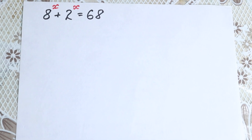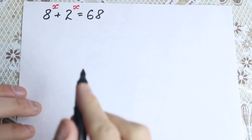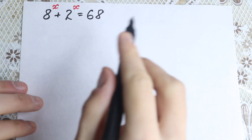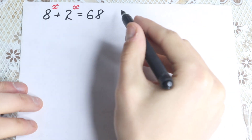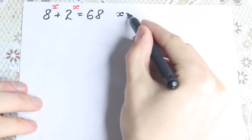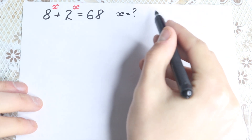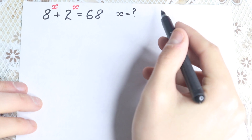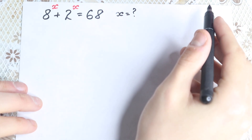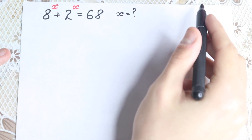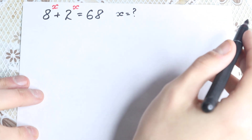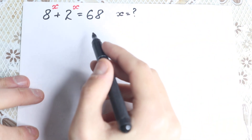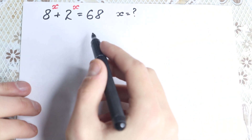Here is a question today: 8 to the x plus 2 to the x equals 68. We need to find x from this interesting exponential equation. There are a lot of approaches — maybe some will take a log on both sides — but I want to show you a really interesting and easy approach.